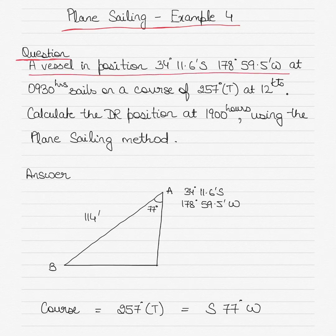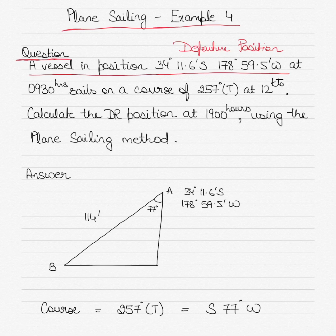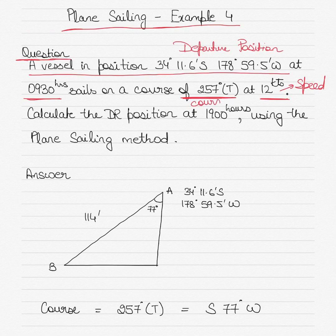This question states that there is a vessel in position 34 degrees 11.6 minutes South, 178 degrees 59.5 minutes West — this is the departure position. The vessel sails at 0930 on a course of 257 degrees true, at a speed of 12 knots.